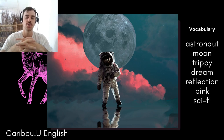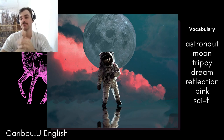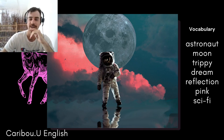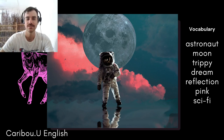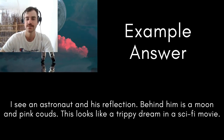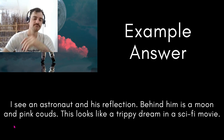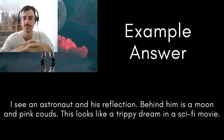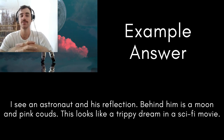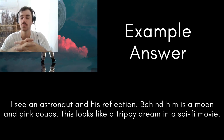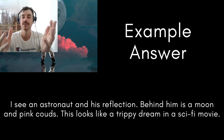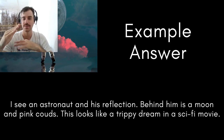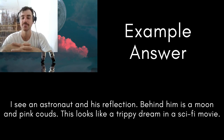Sci-fi is like Star Wars or Star Trek — that's all sci-fi. So how can we use this in a sentence to describe the picture? Here's the example: I see an astronaut and his reflection. Behind him is a moon and pink clouds. This looks like a trippy dream in a sci-fi movie. If you are ever in an English test where you have to describe a picture, here's how you can take some good vocabulary and combine it into a simple answer.